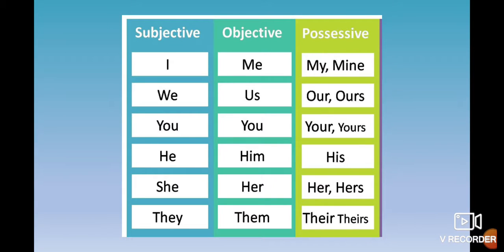'You' is subjective, 'you' is objective, and 'your' and 'yours' are possessive. 'He' is subjective, 'him' is objective, and 'his' is the possessive pronoun. 'She' is subjective, 'her' is objective, and 'her' and 'hers' are possessive. 'They' is subjective, 'them' is objective, and 'their' and 'theirs' are possessive.